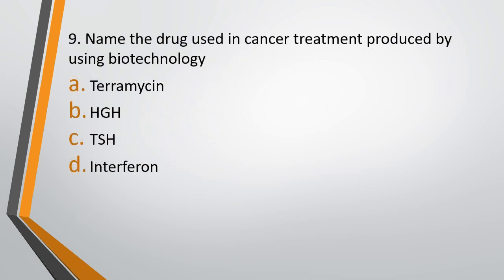Question 9. Name the drug used in cancer treatment produced using biotechnology. Option A, Teramycin. Option B, HGH, that is human growth hormone. Option C, TSH. Option D, interferon. The correct answer is option D, that is interferon. Interferons are used to treat cancer and these are produced using biotechnology processes.